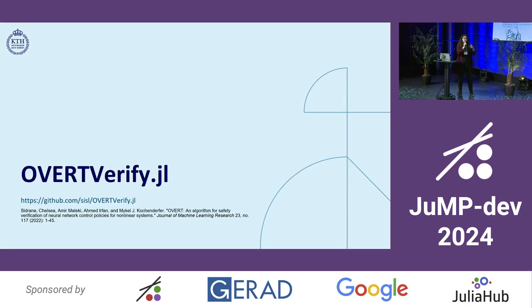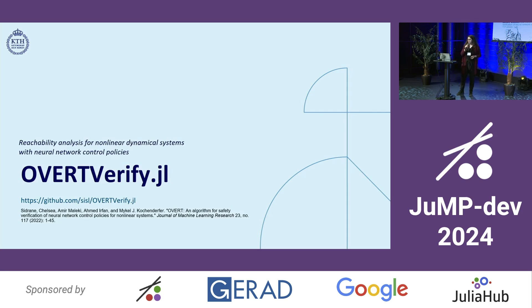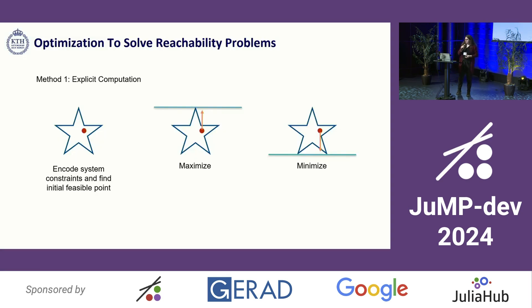I developed a package in Julia called OverVerify.jl during the course of my PhD thesis, which targets reachability analysis for a very specific and difficult kind of system called nonlinear dynamical systems with neural network control policies. I'm just going to give a little overview of that package. There are many ways to solve reachability problems. The way that I chose to address them in my thesis was through solving optimization problems, which brings me here with you today.